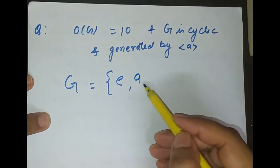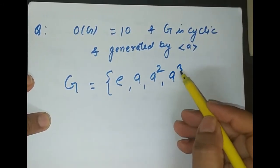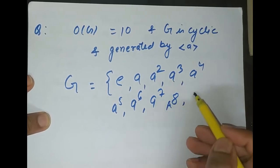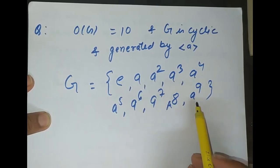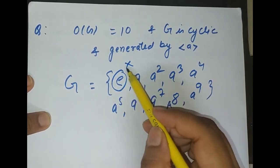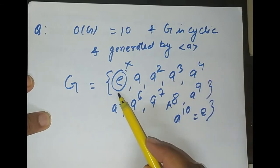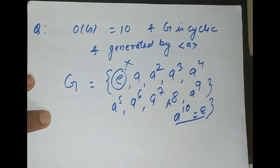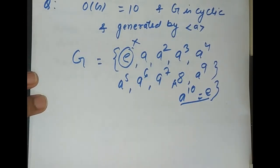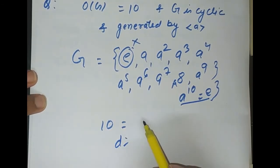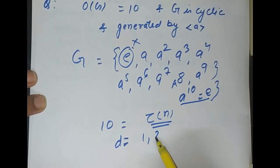G = {e, a, a², a³, a⁴, a⁵, a⁶, a⁷, a⁸, a⁹}, which has 10 elements, with a¹⁰ = e. The divisors of 10 are 1, 2, 5, and 10 — that is 4 divisors. We can also verify using τ(n): 10 = 2 × 5, so τ(10) = (1+1)(1+1) = 4 divisors.